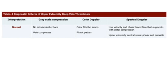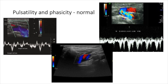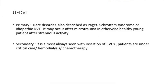Coming on to interpretation: on gray scale you have no intraluminal echoes and the vein easily compresses. On color Doppler the vein fills completely, shows a phasic pattern, and also shows a pulsatile pattern. The subclavian and the internal jugular vein typically have phasicity and pulsatility, which is an indicator that the central veins are patent. This is important when you are evaluating upper extremity DVT.